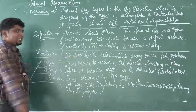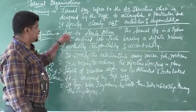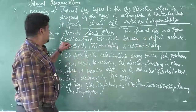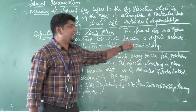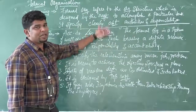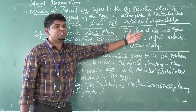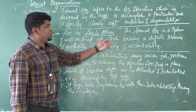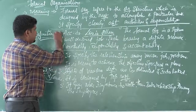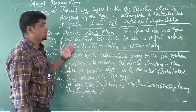Next, the definition. One person called Lewis Allen has given a definition: according to Lewis Allen, formal organization is a system of well-defined jobs, each bearing a definite measure of authority, responsibility, and also accountability. This is the meaning of formal organization according to Lewis Allen. You may get a two-mark question — define formal organization — and you should answer with this definition.